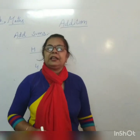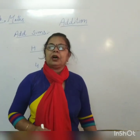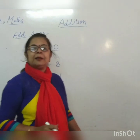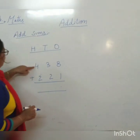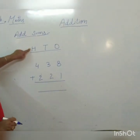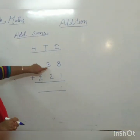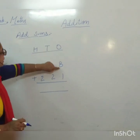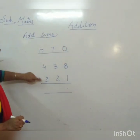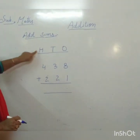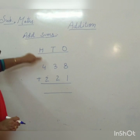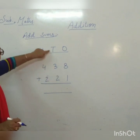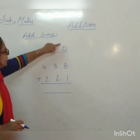Now I will teach you how to add 3-digit numbers. The first number is 4 hundreds, 3 tens, 8 ones. The second number is 2 hundreds, 2 tens, 1 one.